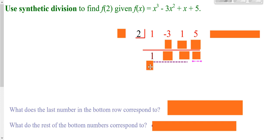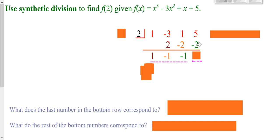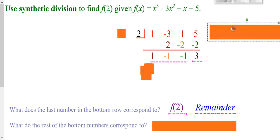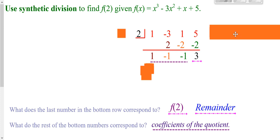The half box times what's in the bottom is what we multiply, and it tells us what to put in the next spot. Then we repeat: add down to get negative 1, half box times what's in the bottom tells us what to put here, and add down again. Then half box times what's in the bottom gives us the next value, and we add down. The last number is your remainder. So f of 2 gives you your remainder. The other numbers correspond to the coefficients of your quotient — so the quotient would be 1x squared minus x minus 1.